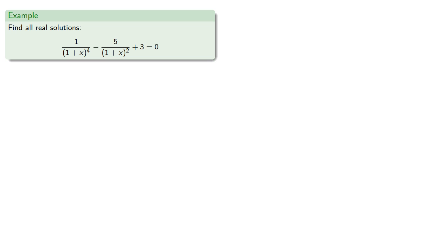So let's consider a more complicated equation. If we let u = 1/(1 + x²), then u² = 1/(1 + x)⁴. And also 5u is the term 5/(1 + x²). So using the substitution gives us a quadratic equation.